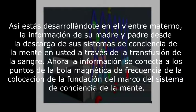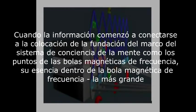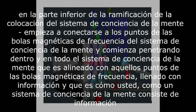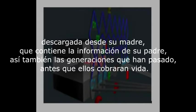As you're developing in the mother's womb, your mother and father's information from their mind consciousness systems downloads into you through the transfusion of the blood. The information connects to the magnetic frequency dot balls of the mind consciousness system foundation framework. The moment the information starts connecting, your essence within the magnetic frequency ball starts connecting to the magnetic frequency dot balls, permeating within and throughout the entire mind consciousness system, which is aligned with those magnetic frequency dot balls filled with information.